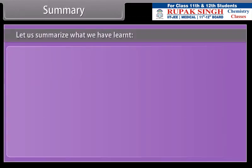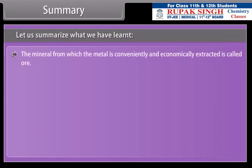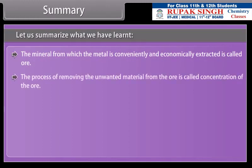Summary. Let us summarize what we have learnt. The mineral from which a metal is conveniently and economically extracted is called ore. The process of removing the unwanted material from the ore is called concentration of the ore.